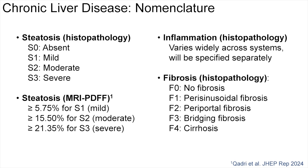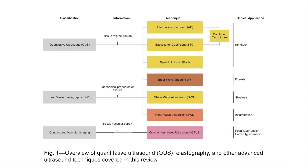In this article, the severity of steatosis, inflammation, and fibrosis is based on reference standards that either include histological assessment or MRI. The grading definitions are presented on this slide. This diagram presents an overview of the QUS, shear wave elastography, and other advanced ultrasound techniques covered in this review.